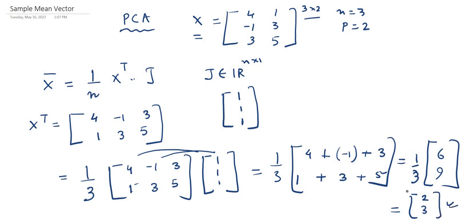So this will be our final result. That means the mean vector will be [2, 3]. Understand this mathematical concept.